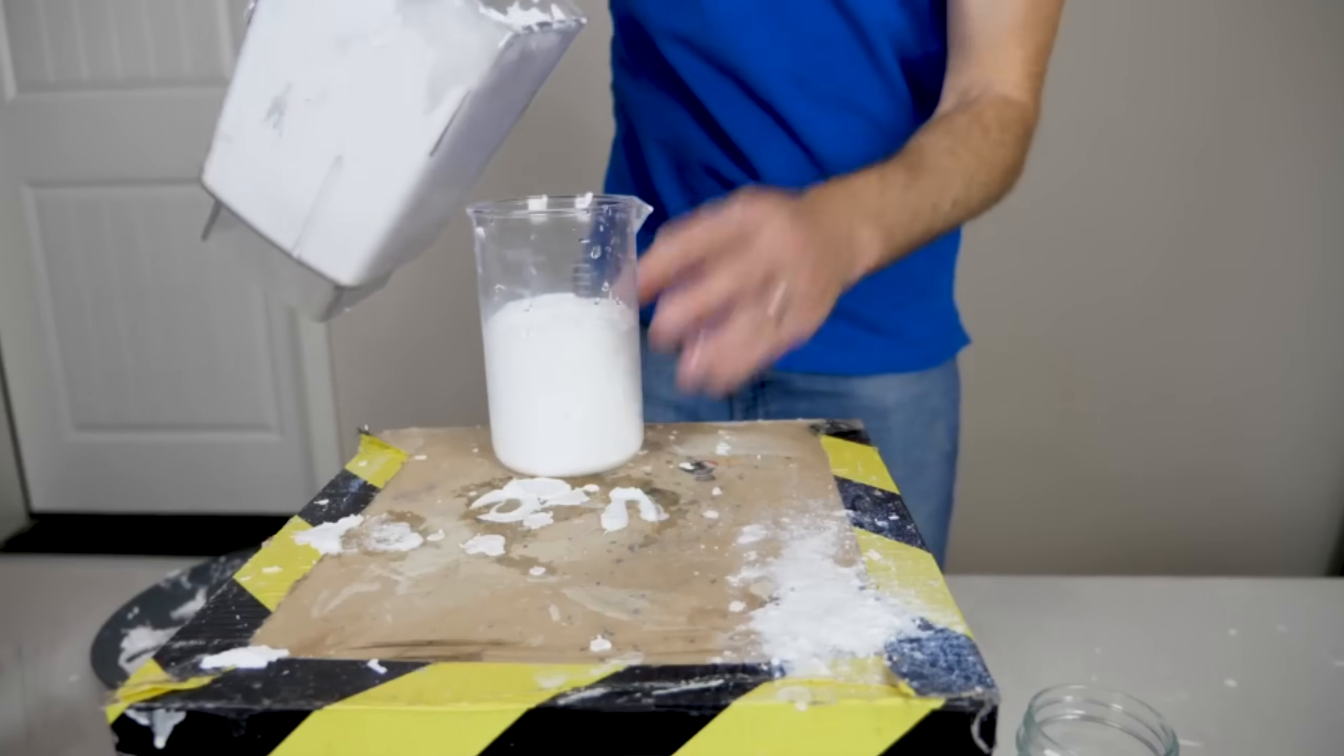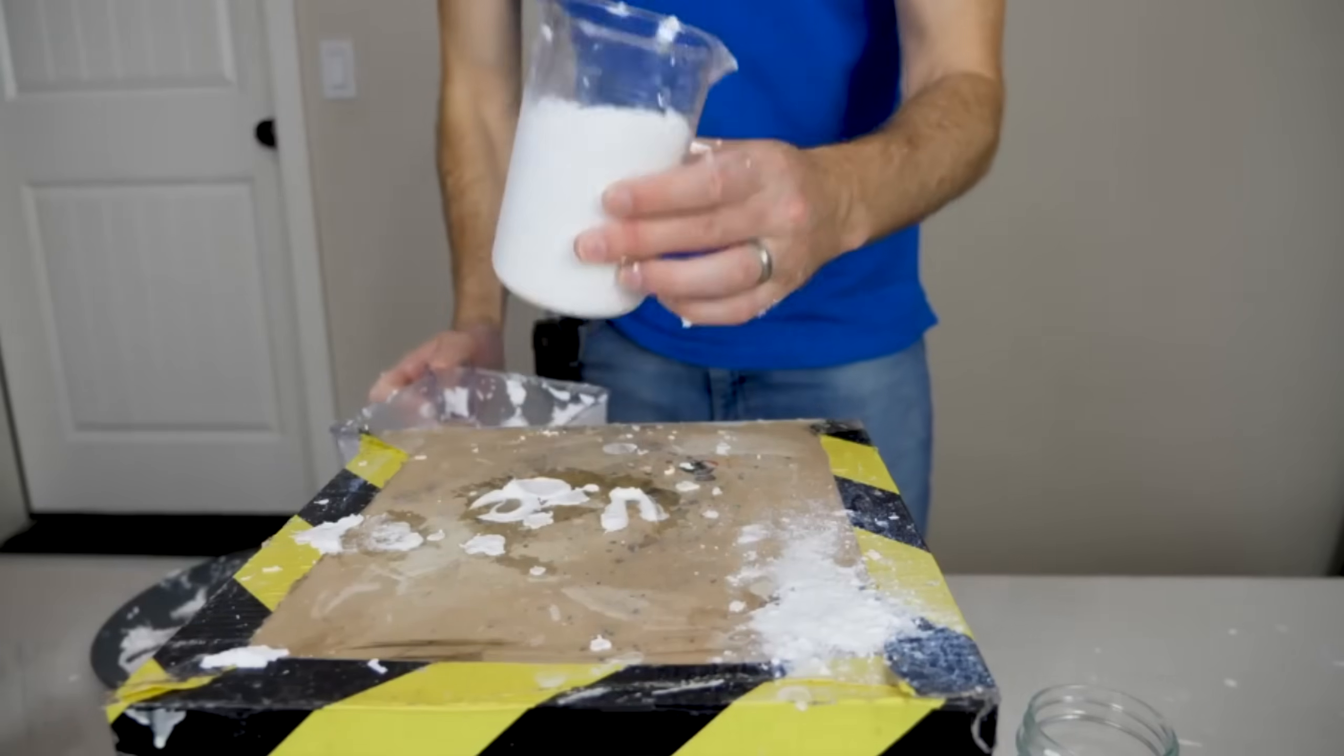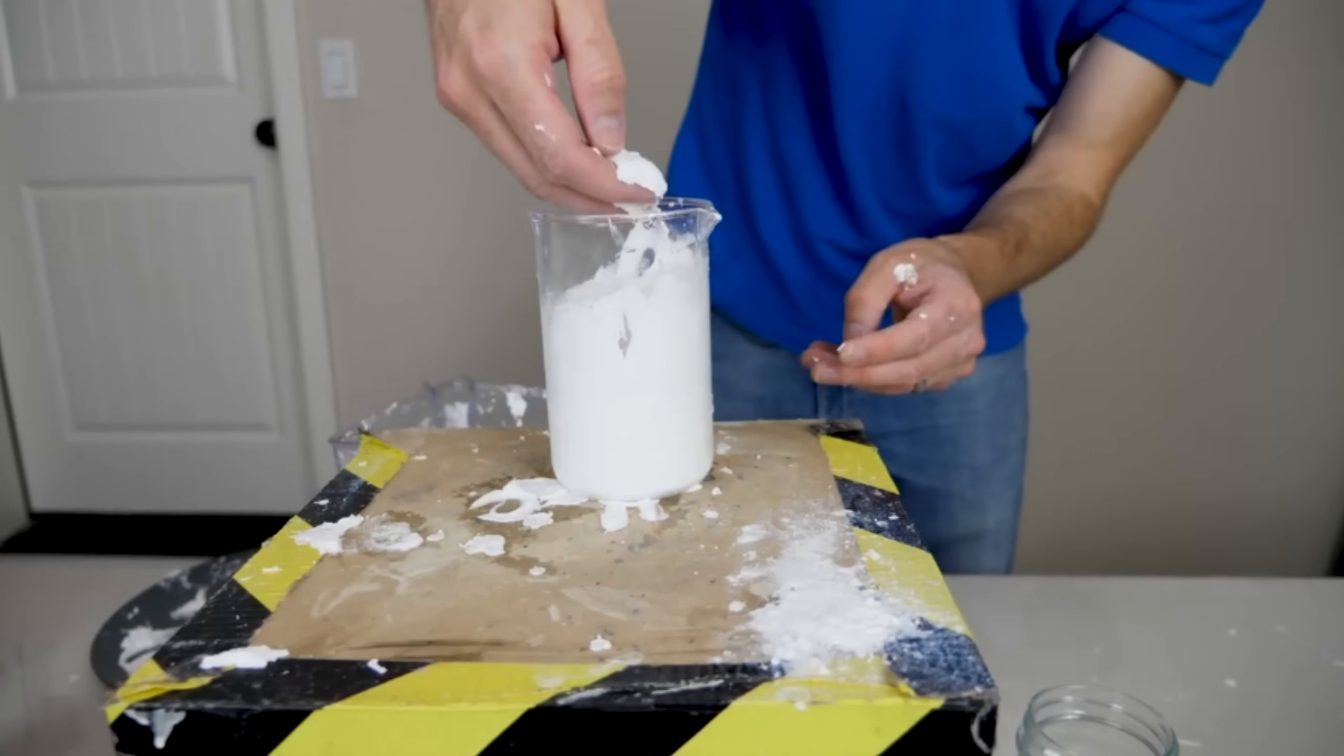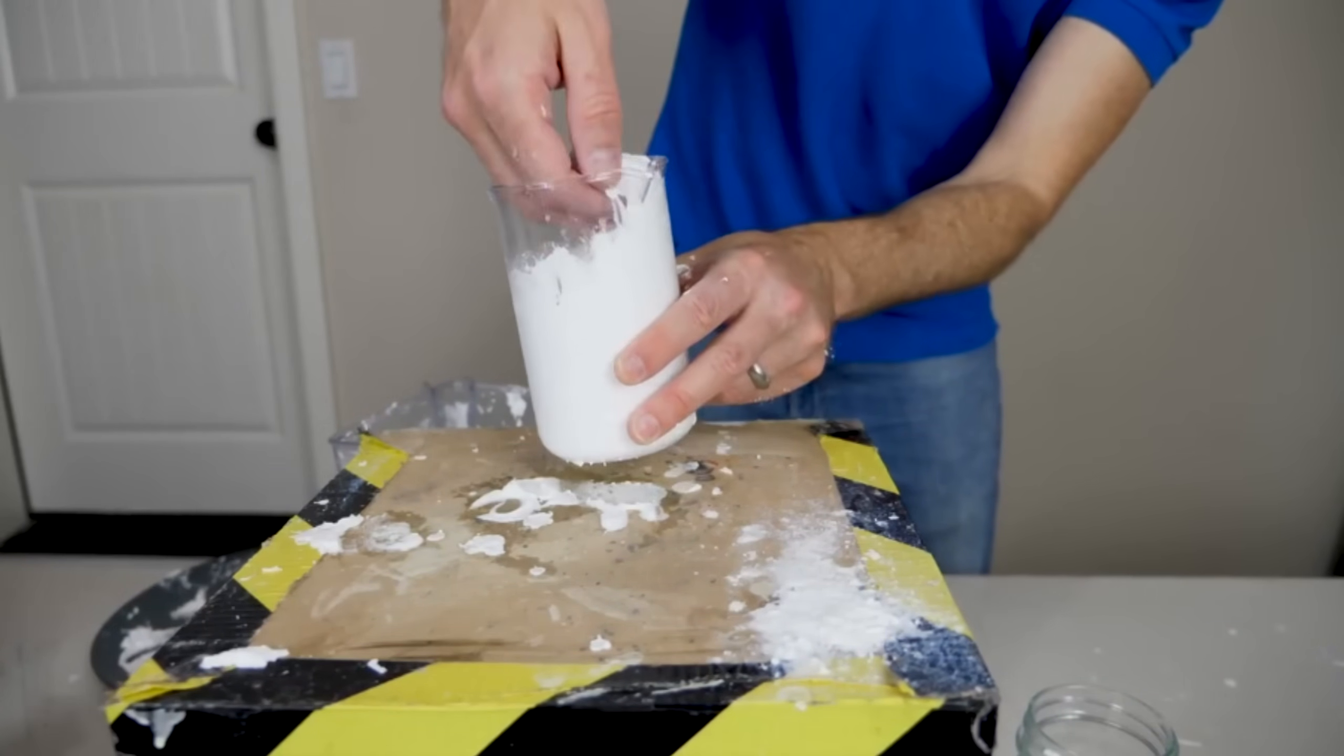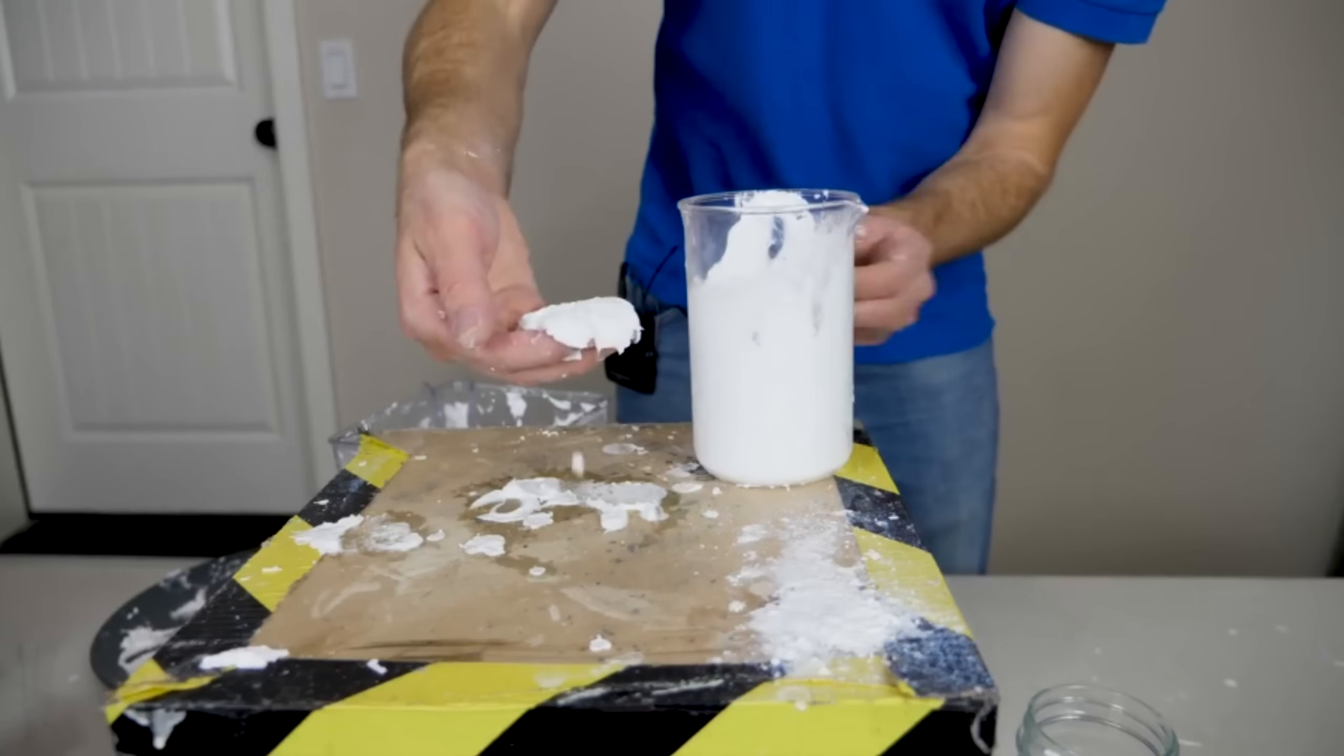So when you mix fumed silica with water, you can make something that's actually called dry water. It has the consistency of a liquid you can pour in everything, but when you touch it, you don't actually get wet. And what it's made of is mostly a bunch of small little water droplets that are just staying apart because the fumed silica won't let them stay together.